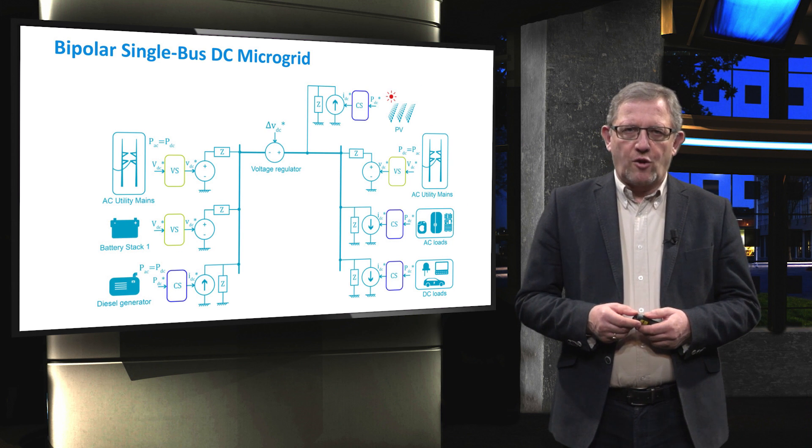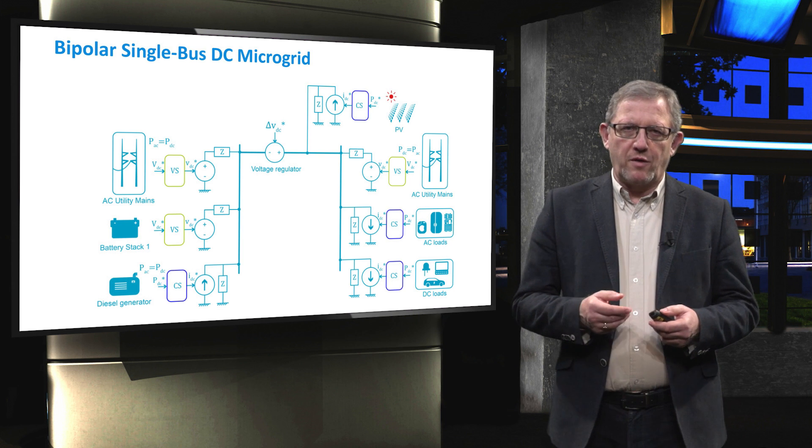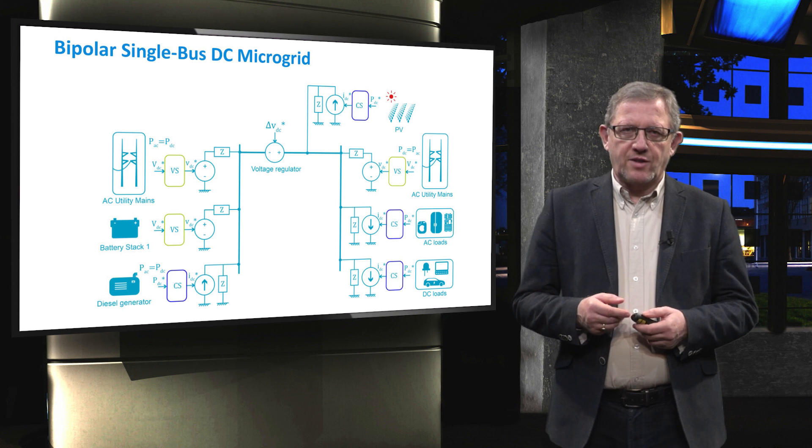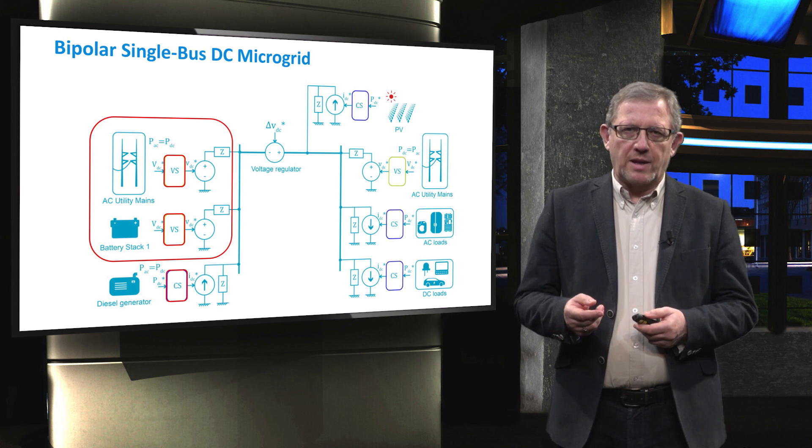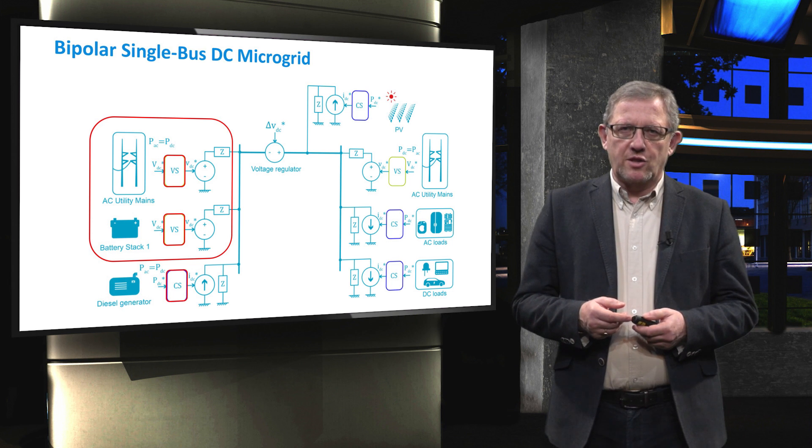In this slide we can see the grid forming and grid feeding representation of the DC microgrid. At the monopolar single bus on the left side, both AC grids — the AC utility mains and battery stack — are able to control the DC link voltage. If the grid is strong, it is typically the best choice to control the monopolar DC link voltage. However, if the grid is weak, the battery bank or diesel gas generator can be used to regulate the monopolar DC voltage. At the bipolar DC link on the right, PV solar units, AC loads, and DC loads are all represented by grid feeding or current source with parallel impedances. The bipolar DC link can be controlled by the AC grid on the right or by the monopolar DC link on the left.